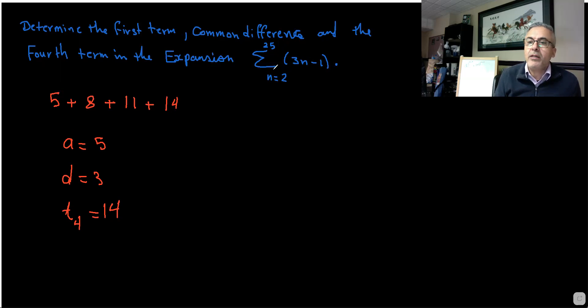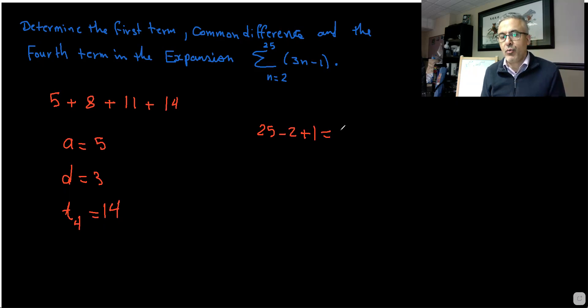Also, if you want to know how many terms you have in this expansion, you go 25 minus 2 plus 1. And that will give you 25 minus 2, which is 23 plus 1 is 24. So you have 24 terms.